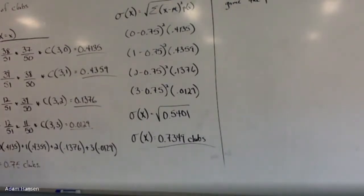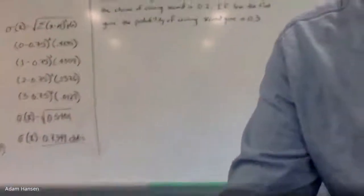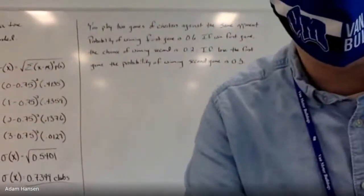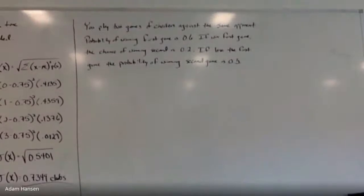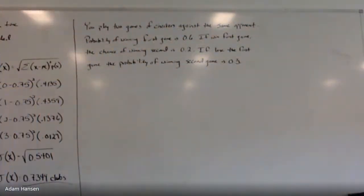Let's try the second experiment — same process: make a distribution table, then calculate expected value and standard deviation. Here's the scenario: you play two games of checkers against the same opponent. The chance you win the first game is 60%. If you win the first game, the chance you win the second is 20%. If you lose the first game, the probability of winning the second is 30%.